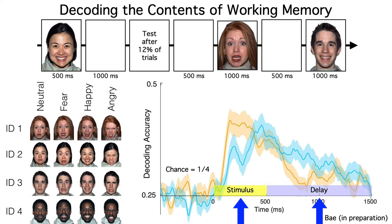Although the decoding was more accurate when the stimulus was visible, information about both identity and expression could be decoded from working memory after the face disappeared. Pretty amazing, huh?